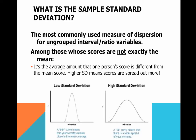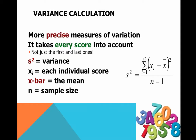The variance and the standard deviation are more precise measures of variation compared to the range and the interquartile range. The reason is that the variance and the standard deviation take every single score into account. When we talked about interquartile range and range, we were really only looking at two different numbers — the highest and the lowest score for the range, and Q3 and Q1 for the interquartile range. But when calculating variance and standard deviation, we take into account every single score.